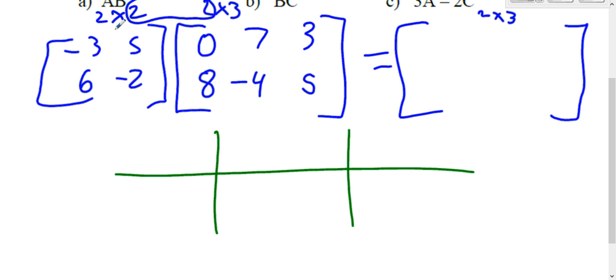And you multiply the top row times the left column. You take the negative 3 and the 5, the top row. And you're going to multiply it to the left column to get the top left. Top times left goes in the top left. Negative 3 times 0 is 0. 5 times 8 is 40.